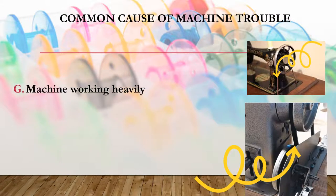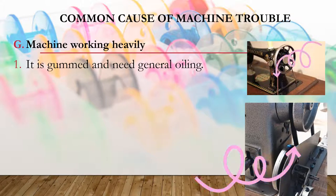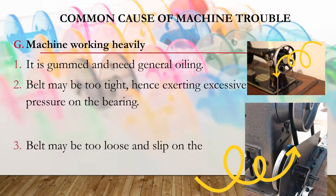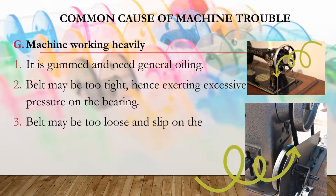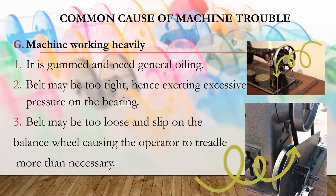Another machine trouble is when your machine is working heavily. It might be going through neither general oiling, so you should clean and oil your sewing machine regularly. Another cause is the belt being too tight, exerting excessive pressure on the bearing. The belt should not be too tight nor too loose so that your machine will work properly.